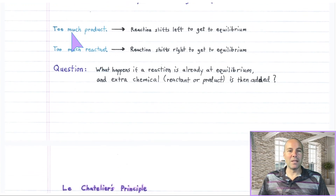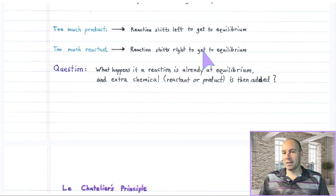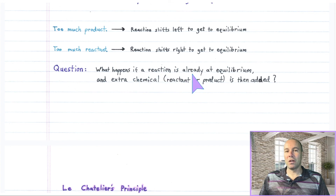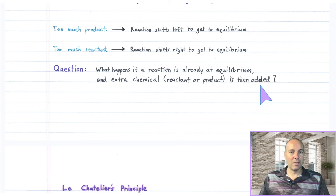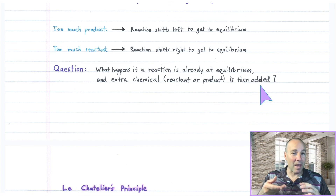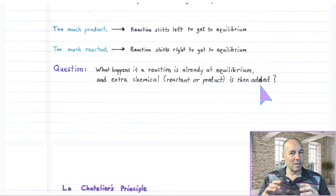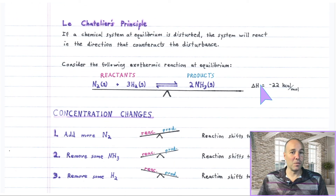If you have too much product, the reaction shifts left to reach equilibrium. Likewise, if you have too much reactant, it shifts right. Before we go, consider this question: what happens if a reaction already at equilibrium has extra reactant or product added? Does it stay at equilibrium? We'll see how it affects the reaction mixture in the next video on Le Chatelier's principle. Stay tuned. Aloha.